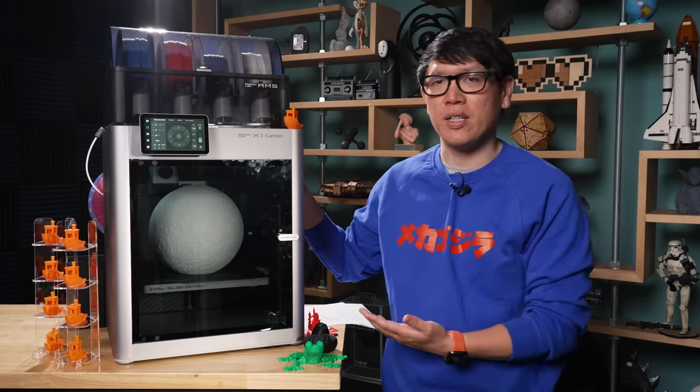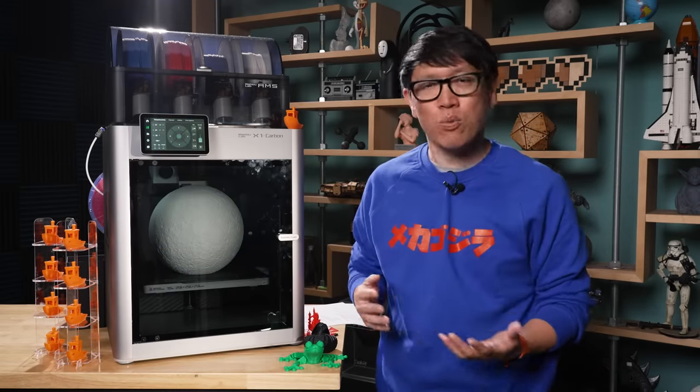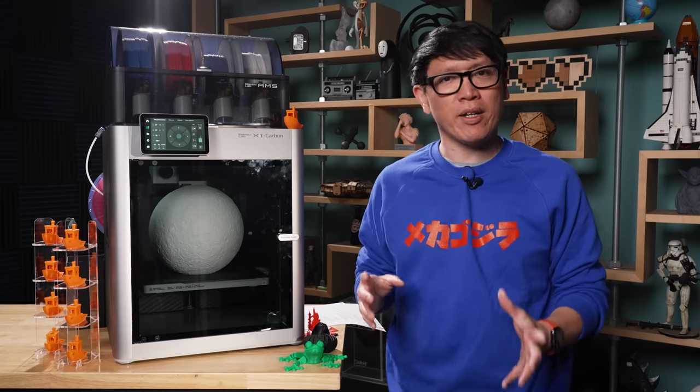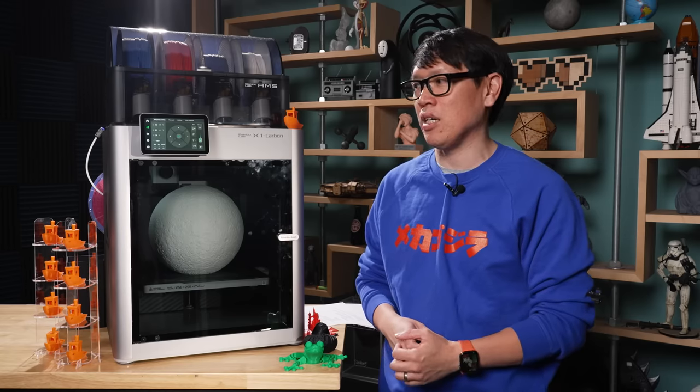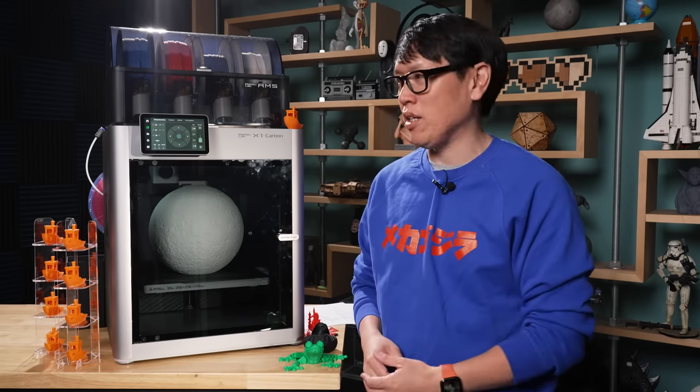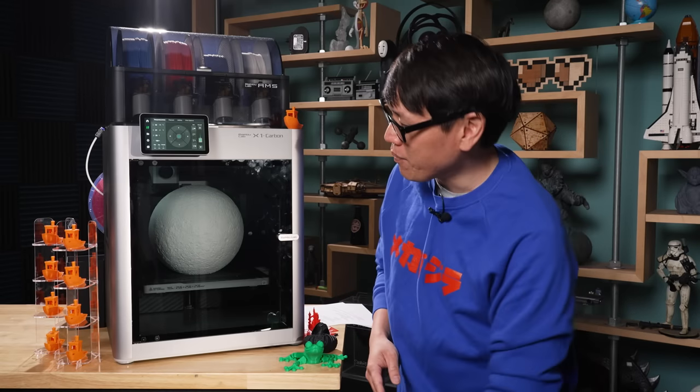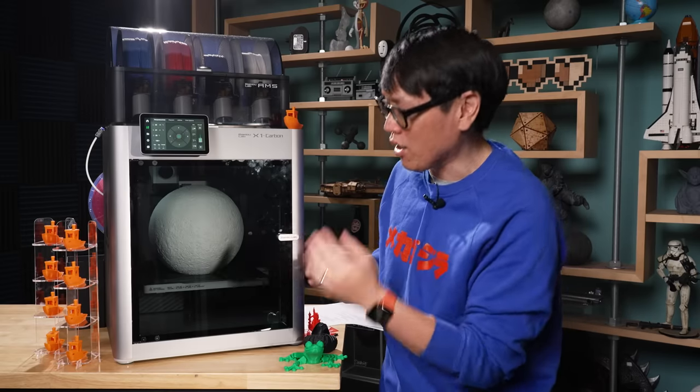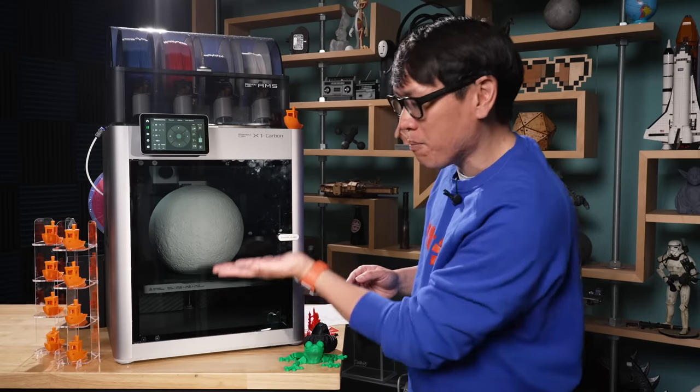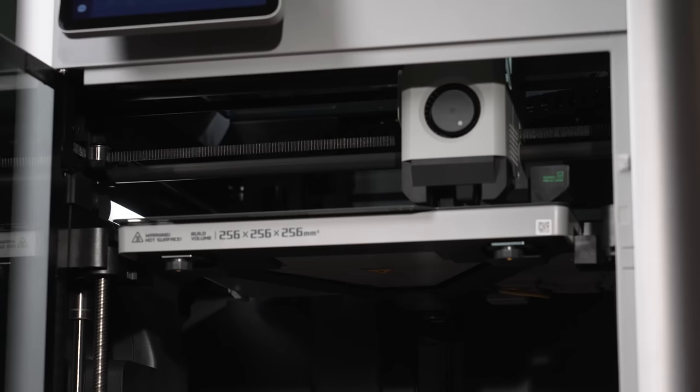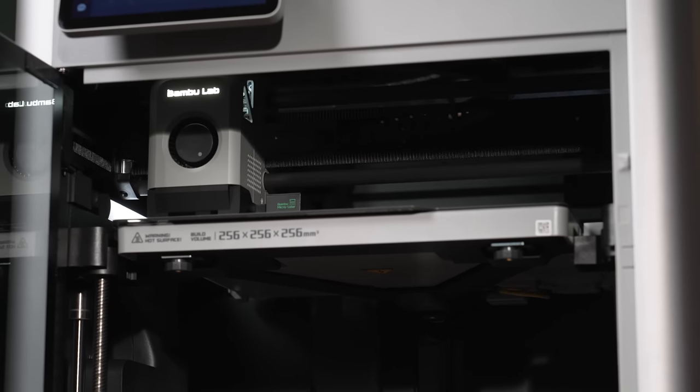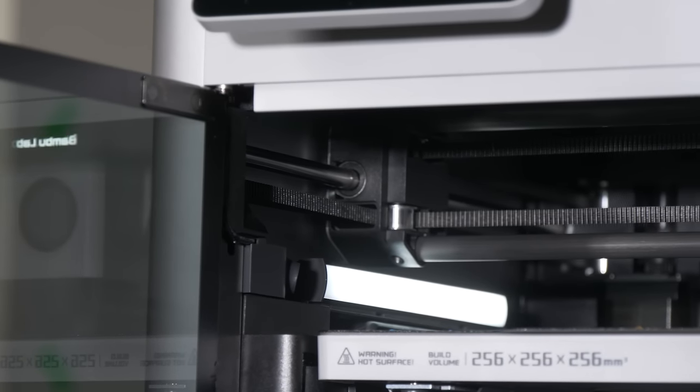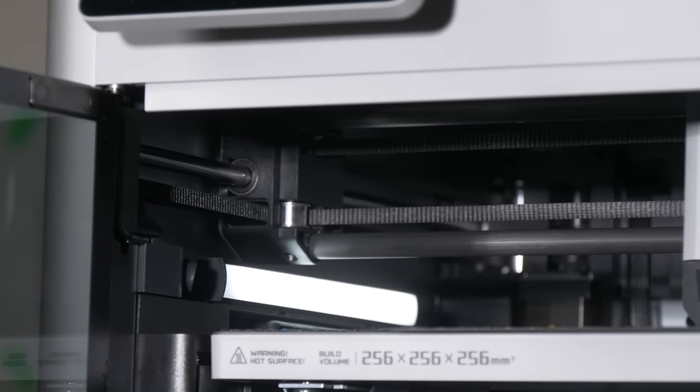So what makes the Bamboo Labs X1 and X1C specifically here unique? Well, it's one of the first Core XY printers we've tested. These are printers like the Voron, the Ender 6 I believe is Core XY. And fundamentally, it moves its printhead in a different way than some of the classic 3D printers that we've used, some of the ones that you might find really affordable and accessible, and even some like the ones from Prusa. So as opposed to using stepper motors to directly move the hot end up and down and left and right over this three-axis volume, what you have here is instead a bed that moves up and down over these rails really quickly.